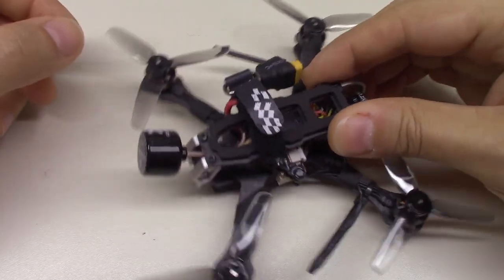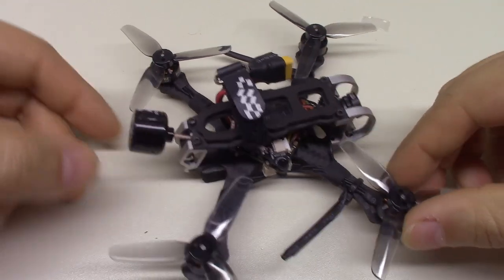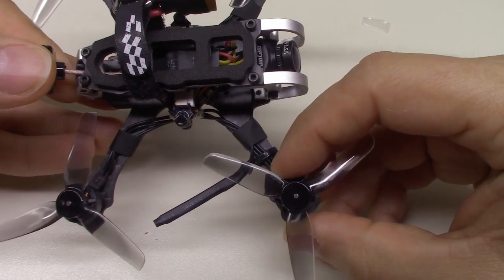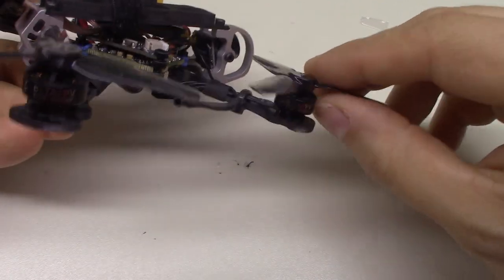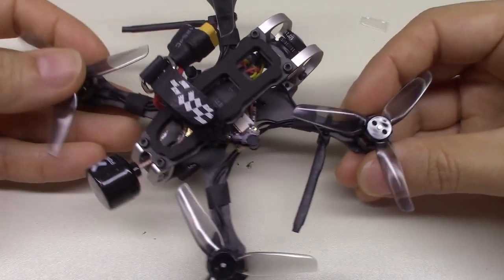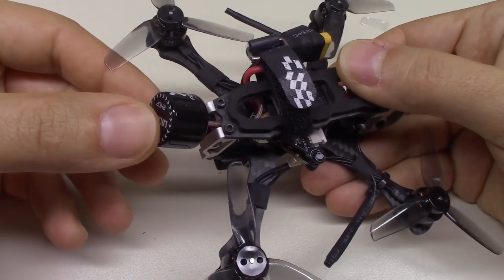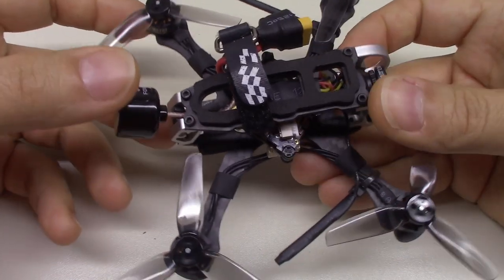Here's the configuration I ended up settling on. I've got these new HQ prop 65mm x3 propellers, and they're really low-pitched, but they seem to work pretty well for this quad. I also ended up putting a lollipop antenna on here. It's a little bit big, but it does work fairly well.